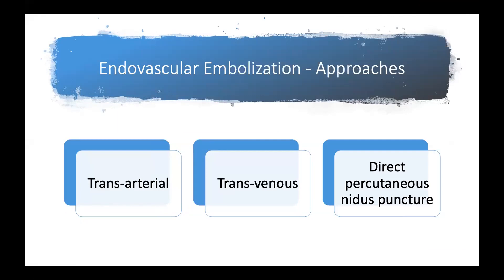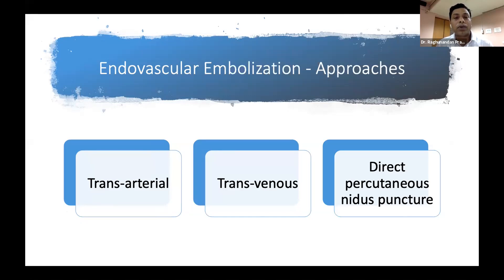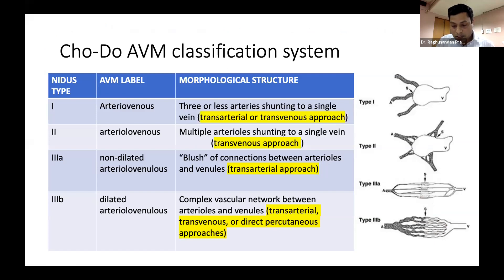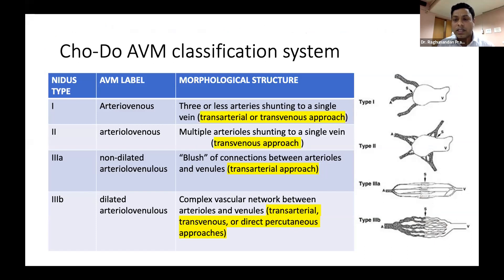There are three approaches by which we can access these lesions: transarterial, transvenous, and direct percutaneous nidus puncture. From the treatment point of view, it's very important to have a clear understanding of the anatomy and nidus morphology. Various classification systems have divided these high-flow lesions into categories; one very popular one is the CODO AVM classification system, which helps in deciding the treatment approach.